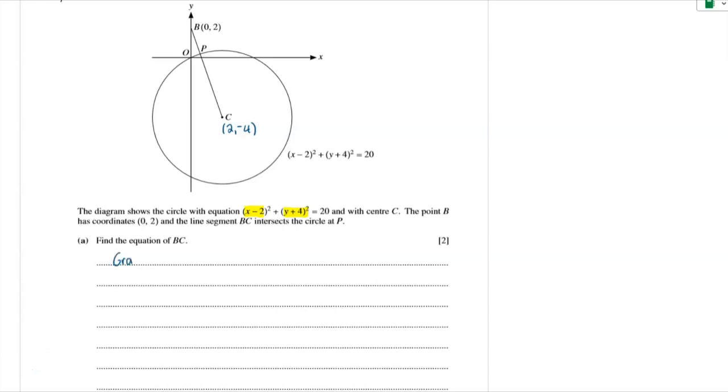To do that, we find the gradient of BC, which is the change in y, 2 minus negative 4, over the change in x, 0 minus 2, which is 6 over minus 2, which is negative 3.